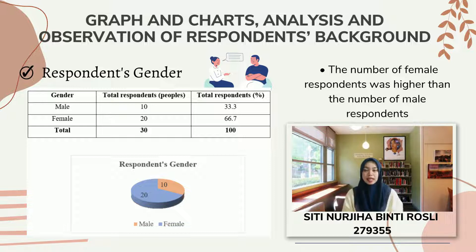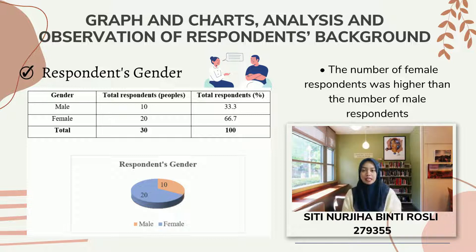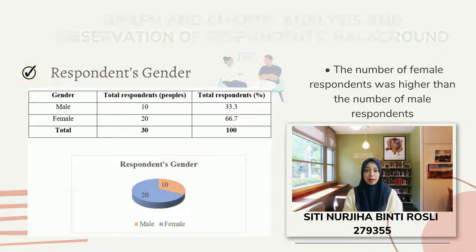Out of all characteristics that influence customer purchase behavior, gender is the most important. This is because disparities in men's and women's expectations, needs, lifestyle, and other factors influence their purchasing decisions. It might be said that women have a lot of buying power.